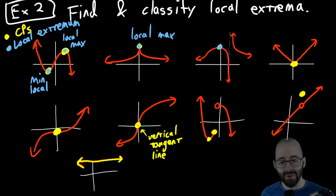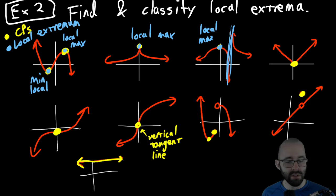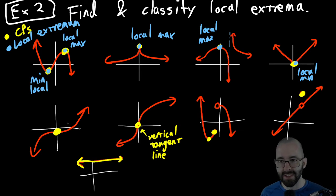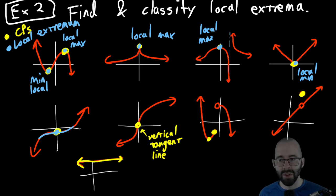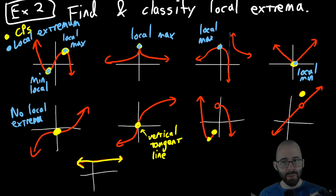Next one — same logic. There's nothing going on here for local max and local min because the function is not defined there. Next one — yes, that's a local min; there are no other ones. What about this cubic function? This can't be a local min or a local max because if we only look at small things around it, well there are bigger points and there are smaller points — so this is not a local extremum. There are no local extrema on this one.